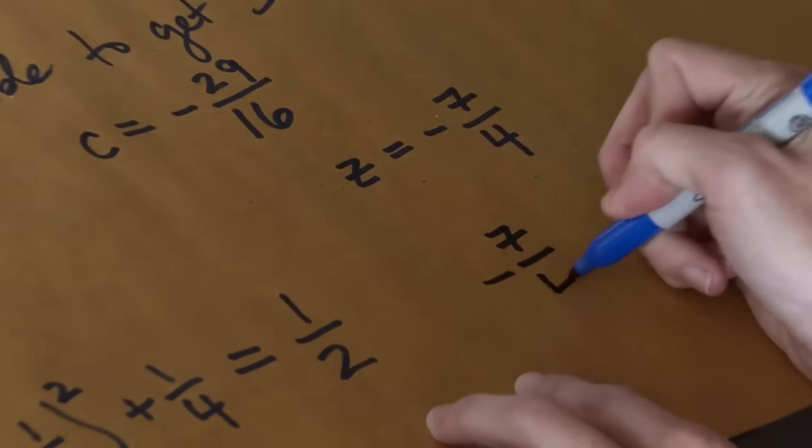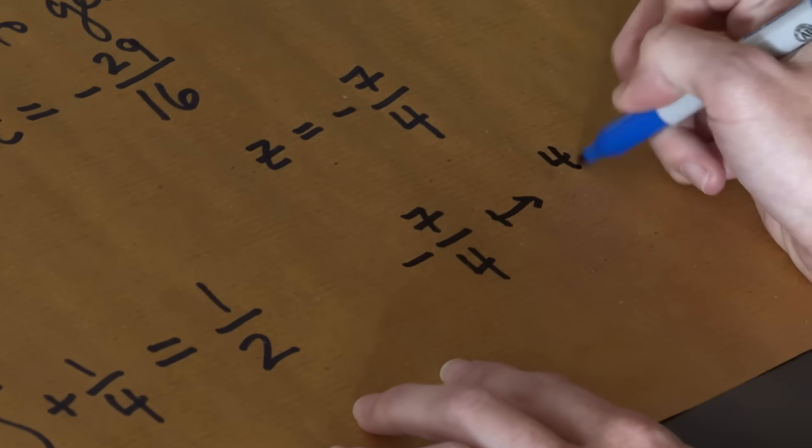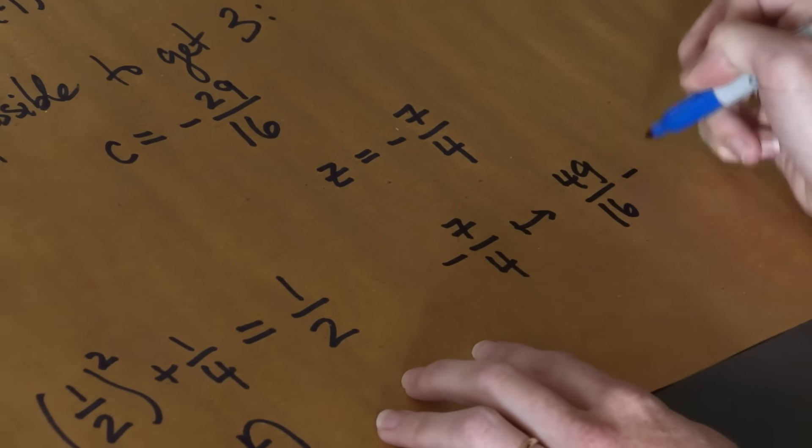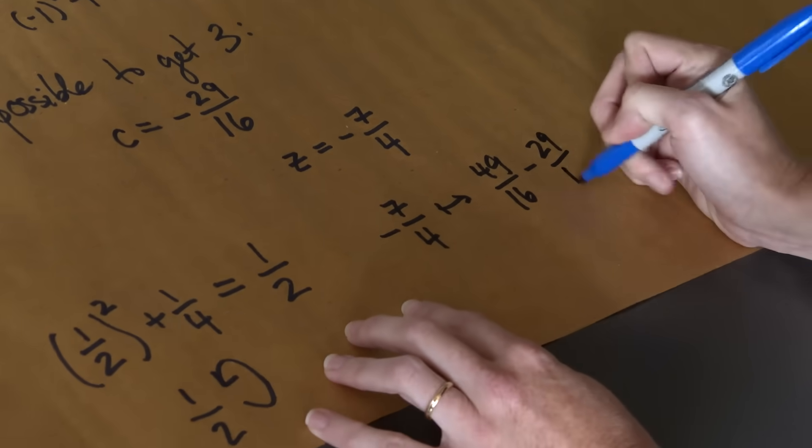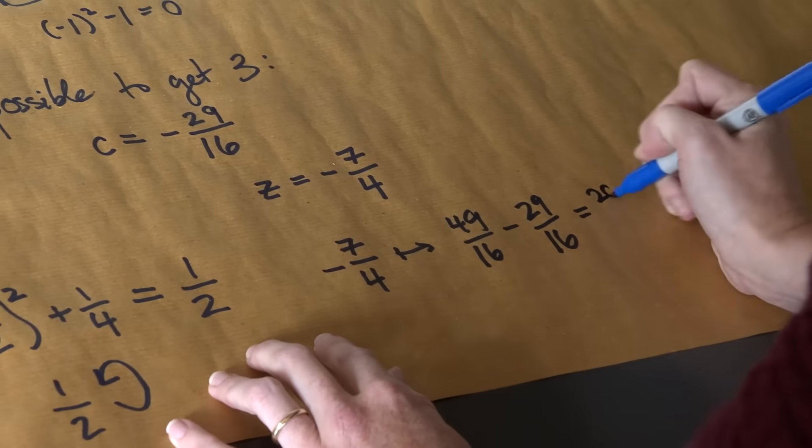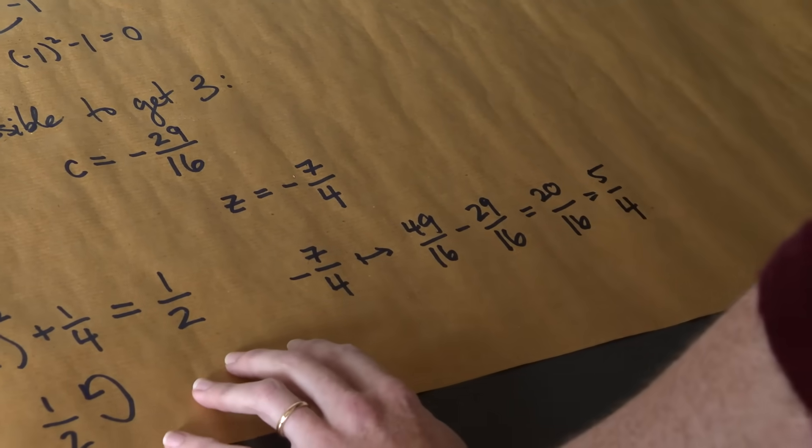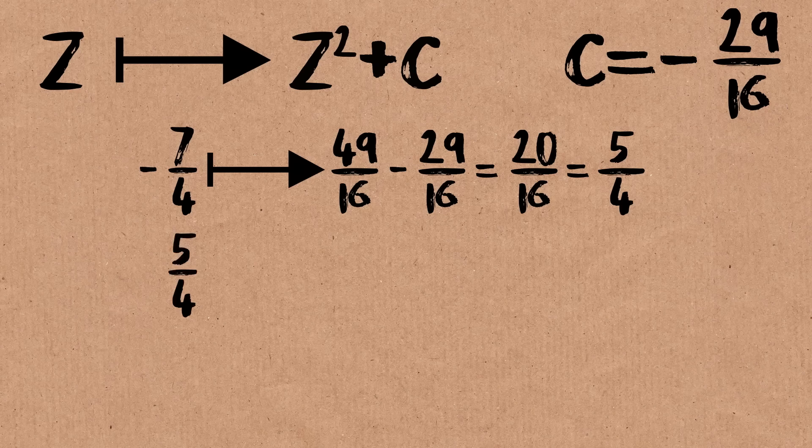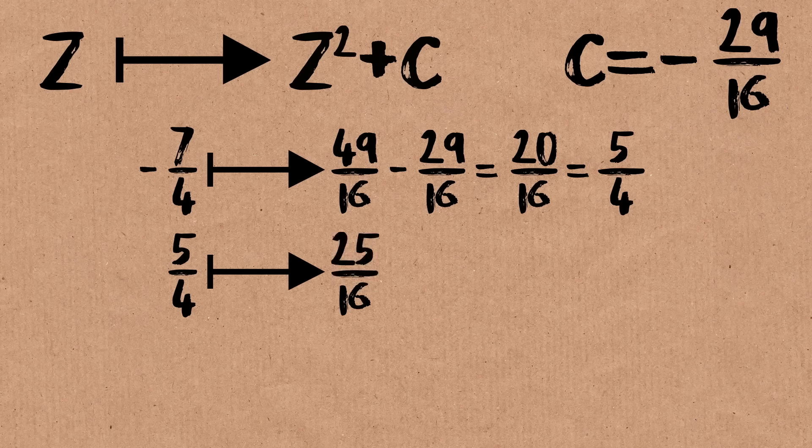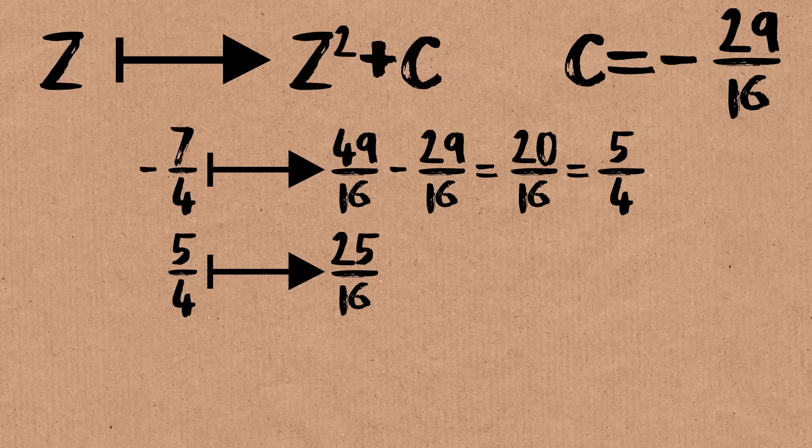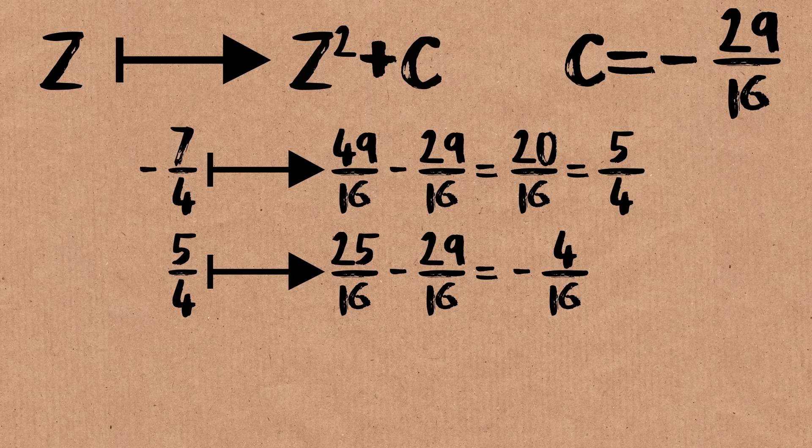So minus 7 fourths. When I square this, I get 49 over 16. And then I subtract 29 over 16. That's 20 over 16, otherwise known as 5 over 4. Now, when I take 5 over 4 and I square it, I get 25 over 16. And then I subtract 29 over 16. I get minus 4 over 16, otherwise known as minus 1 quarter.